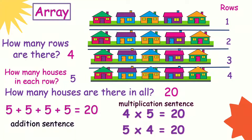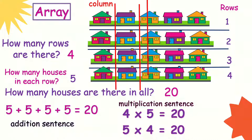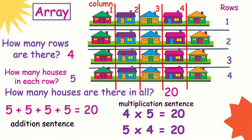We can also write another multiplication sentence using the columns. How many columns are there? There are 5 columns — 1, 2, 3, 4, 5. So we can have 5 times 4 equals 20. That's array by rows and columns.